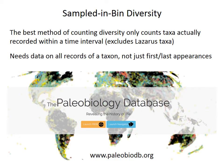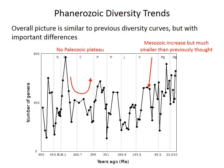It turns out the best method for counting diversity actually ignores Lazarus taxa and only counts taxa recorded as fossils within the interval — a type of count called sampled-in-bin diversity. That method can't be calculated from just first and last appearances; you actually need all the occurrence records of a taxon. This has prompted the development of new databases, like the Paleobiology Database, which contains all those occurrence records and also allows correction for variations in sampling intensity.